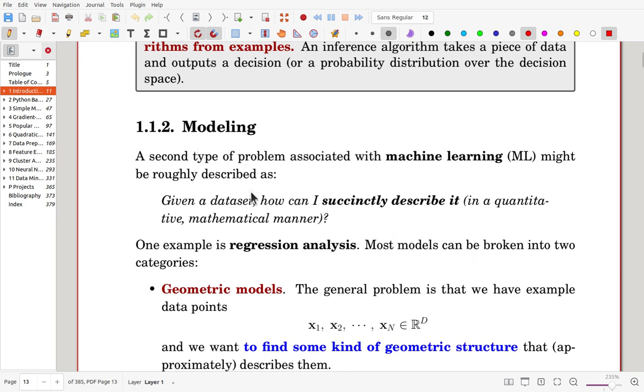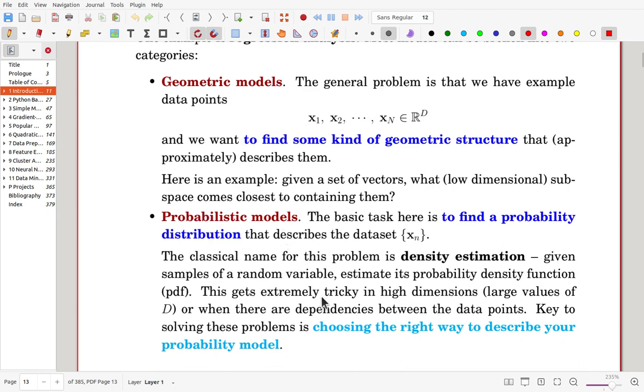In these problems, you can make geometric models. And that is to find some kind of geometric structure. Or, probabilistic models, which is to find a probability distribution that describes the data set. Here, when you are working on modeling, choosing a right hypothesis space is really important. So, you have to describe your model very precisely, accurately.